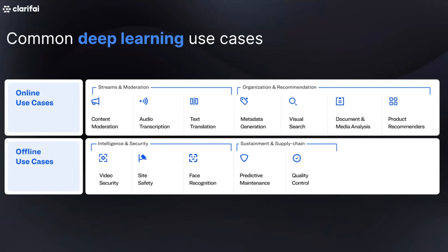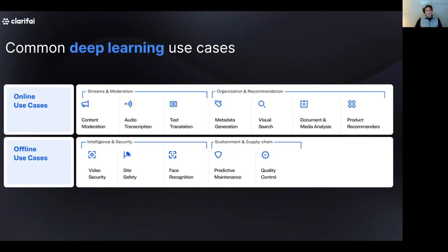Increasingly, people are also using face recognition to add security to a physical space. It's also used in the online space where people use face recognition to, for example, automate the process of applying for a new bank account. The last category is sustainment and supply chain, where we think about how to use AI to maximize your operations and uptime, or identify issues throughout your operations.